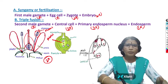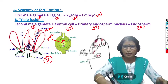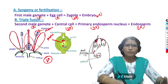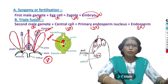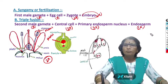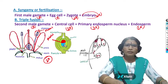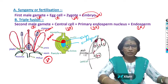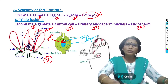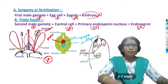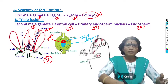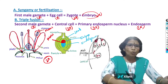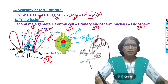After fertilization, the synergids — which guided pollen tube entry — degenerate. The antipodal cells towards the chalaza also degenerate. The egg cell, after fertilization, develops into the embryo, and the central cell region develops into endosperm. The embryo sac is finally filled with embryo and endosperm. As the embryo grows, the endosperm degenerates because it supplies food and nutrients to the developing embryo. After fertilization, the ovule develops into a seed and the ovary develops into a fruit. The sepals, petals, stamens, style, and stigma wither away.